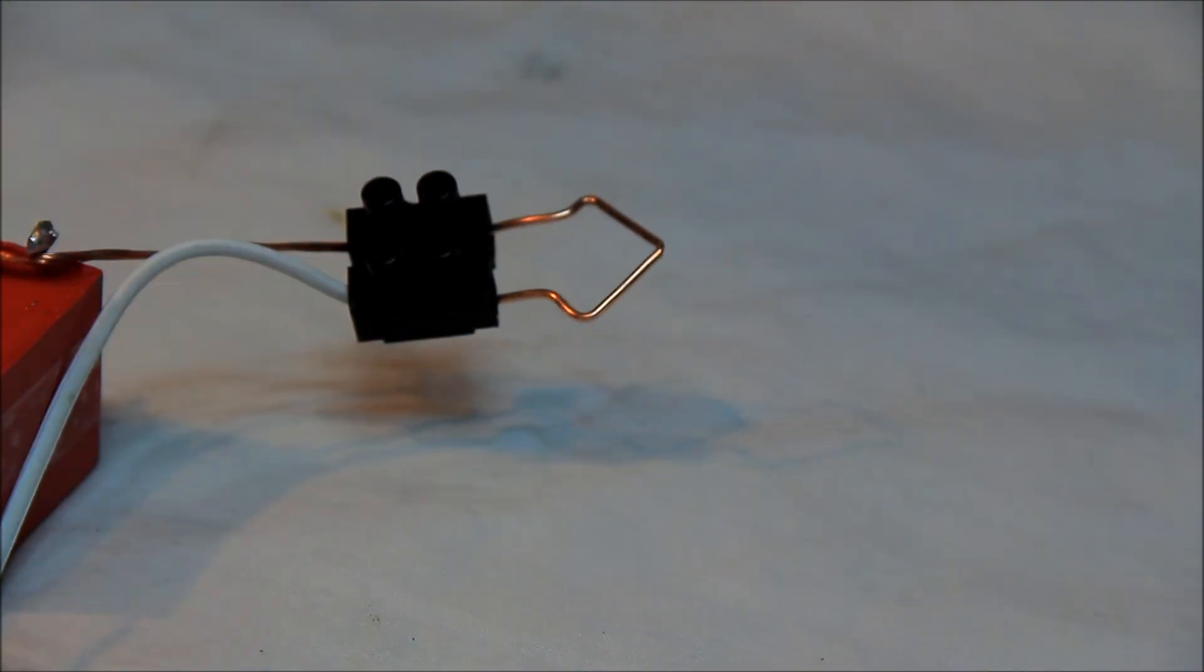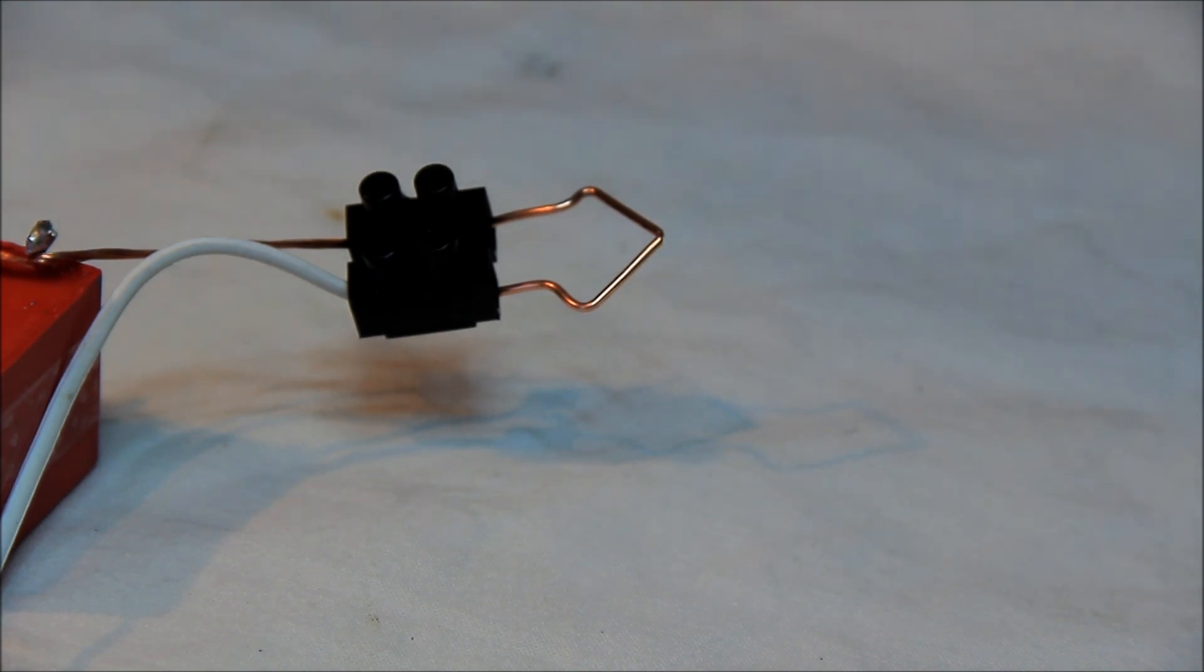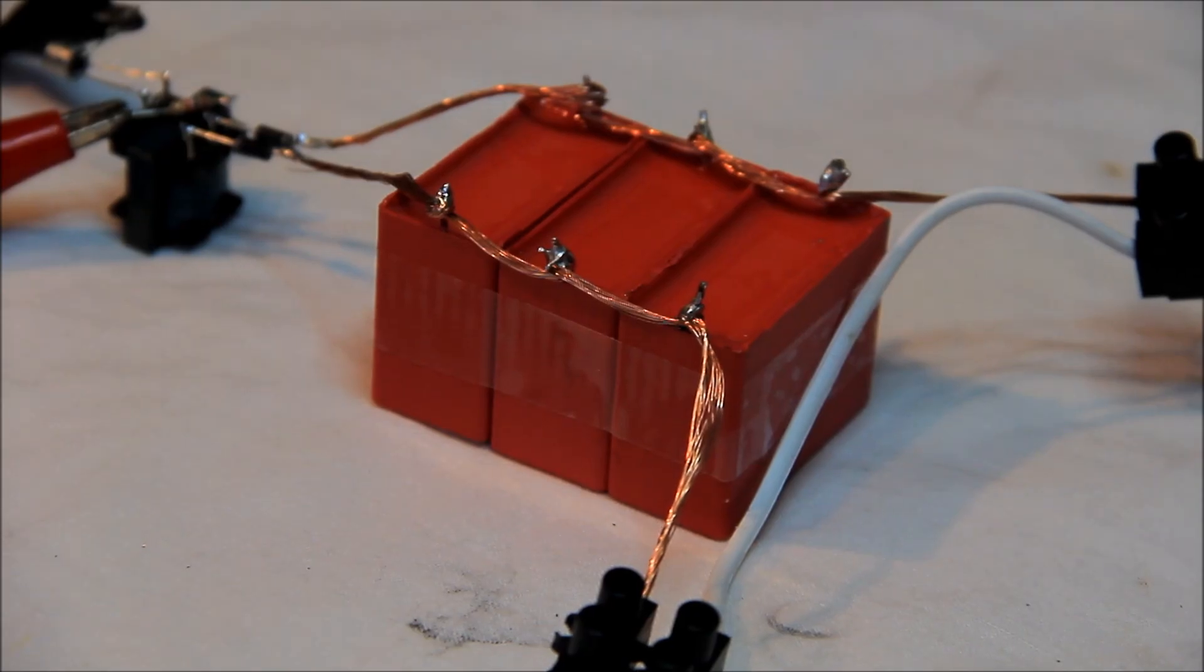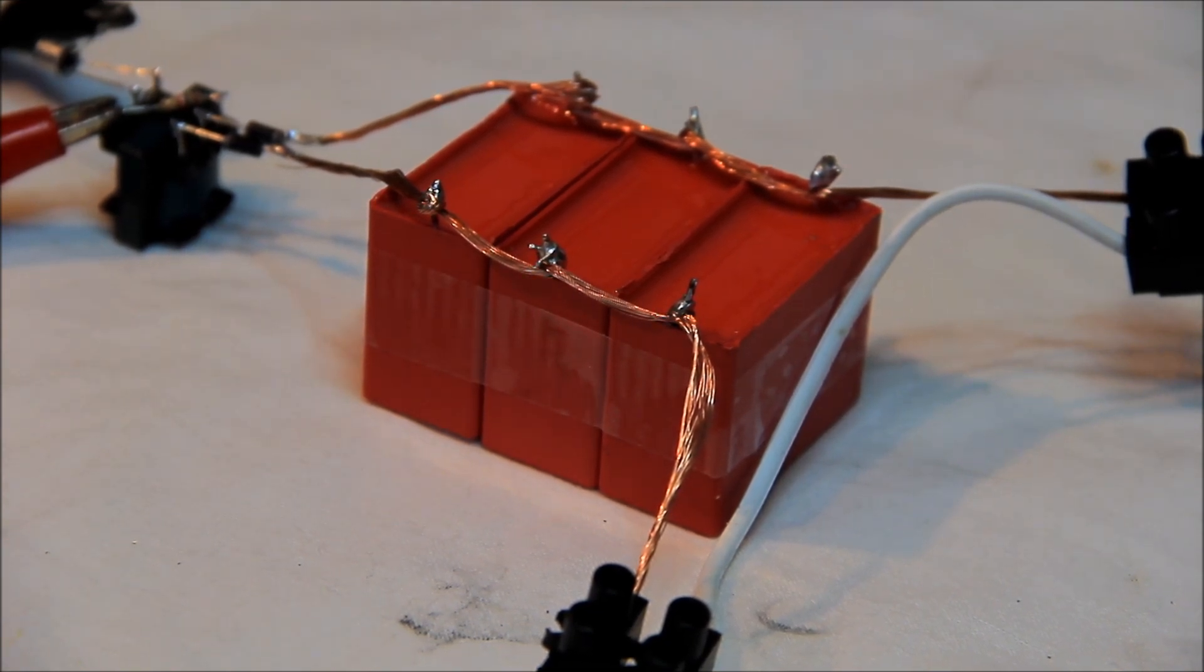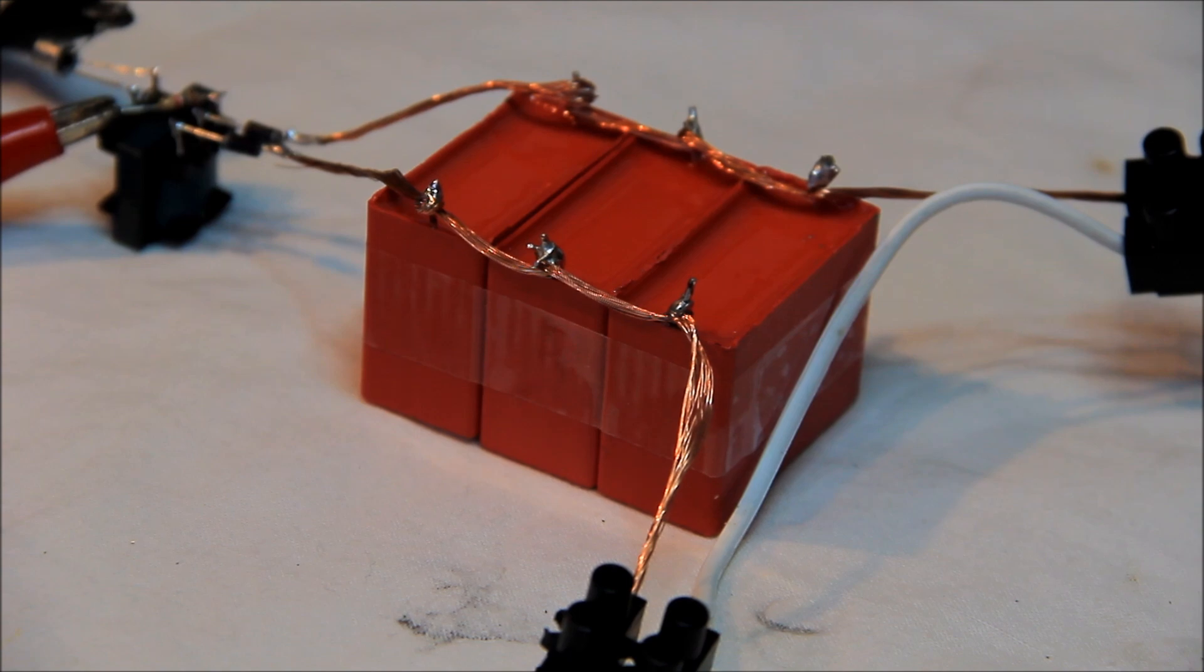In this case, when we have a spark on this spark gap, we have an electromagnetic pulse on our coil. But be careful, there is a risk of electrical shock, so be careful and don't touch the contacts from this capacitor.